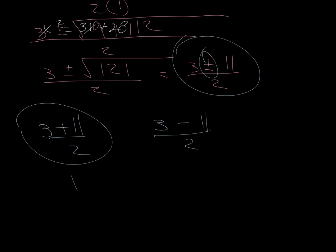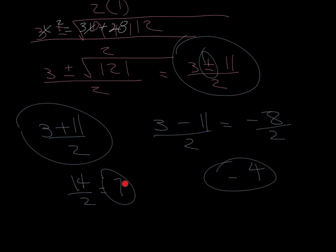3 plus 11 is 7. 3 minus 11 is going to be negative 8 over 2 or negative 4. So notice what happened here. I get two answers for this problem: I get a 7 and a negative 4.